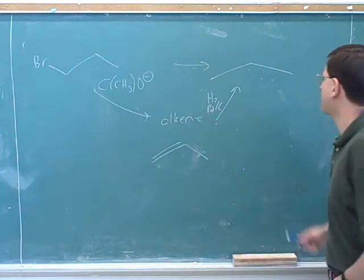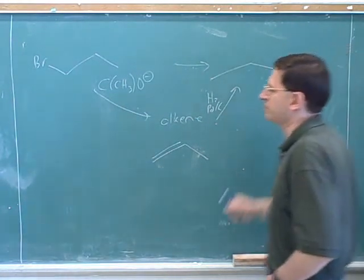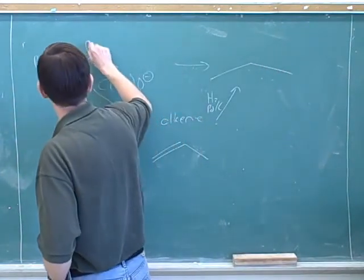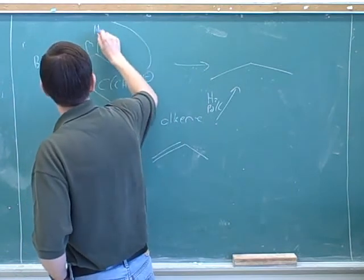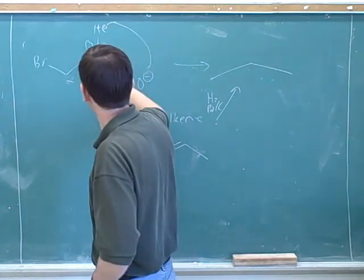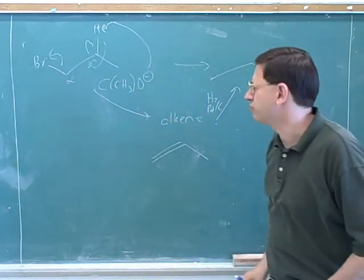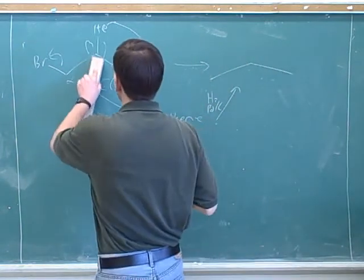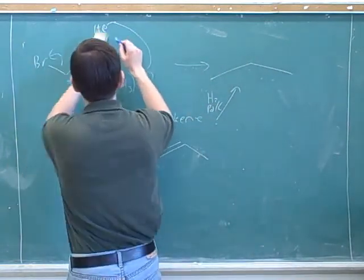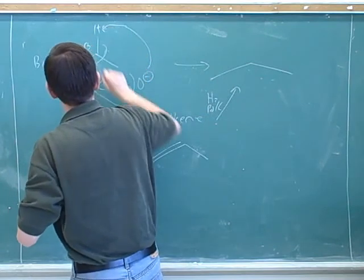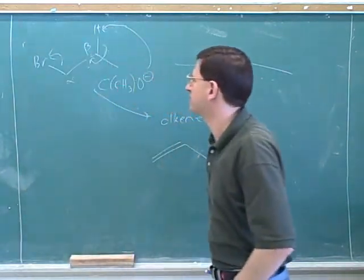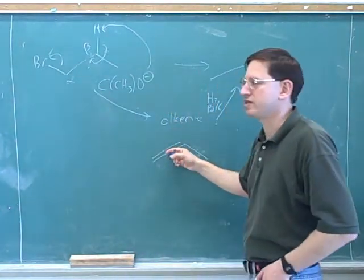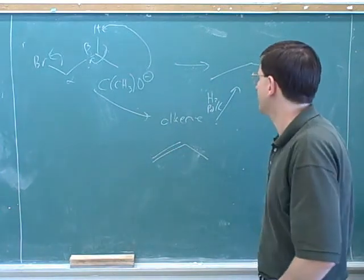When doing these problems, put the product on the far right of your paper and the starting material on the far left so you have plenty of room. One important point about the E2 mechanism: the base attacks the beta hydrogen, not the alpha carbon. You'd still be expected to draw that mechanism on an exam. Remember to label the alpha and beta carbons. A common mistake is taking the hydrogen from the alpha carbon — no, we take it from the beta carbon, and that's what puts the double bond in. Your synthesis was correct.